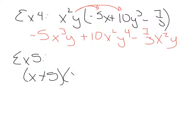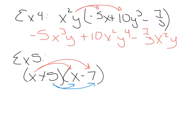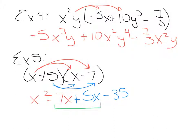Example 5: multiply x plus 5 times x minus 7. Now we move into binomial times binomial. Some of you learned this as FOIL. I call this double distribute, because first you distribute the first term, then you distribute the second term. So x times x gives x squared, x times negative 7 makes negative 7x, 5 times x makes positive 5x, and 5 times negative 7 makes negative 35. Most of the time you have like terms in the middle to combine, so this turns out to be x squared minus 2x minus 35.